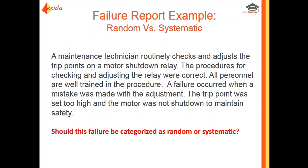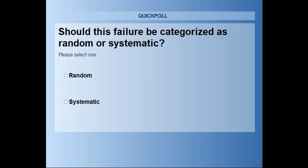Our second example: a maintenance technician routinely checks and adjusts the trip point on a motor shutdown relay. The procedure for checking and adjusting the relay is correct and all personnel were trained. The failure occurred when a mistake was made with the adjustment — the trip point was set too high and the motor was not shut down to maintain safety. Should this be categorized as a random or systematic failure?